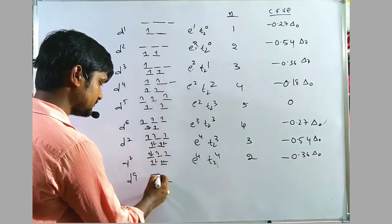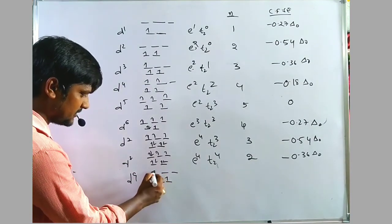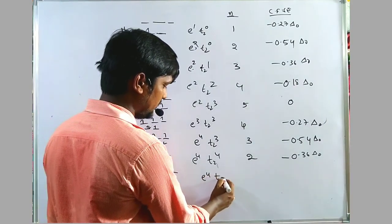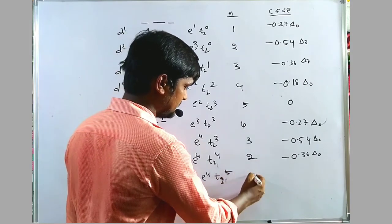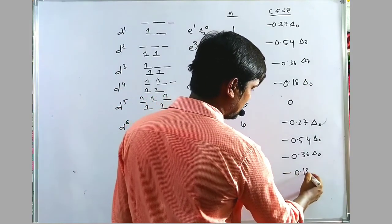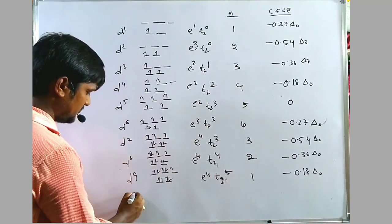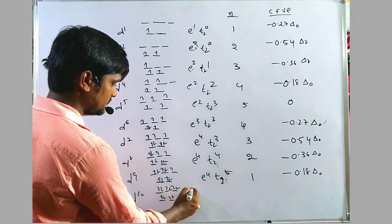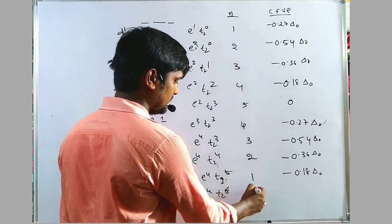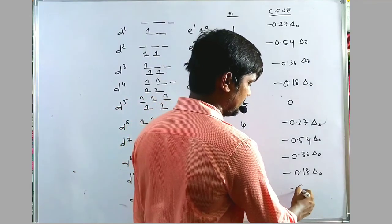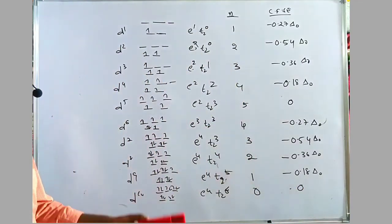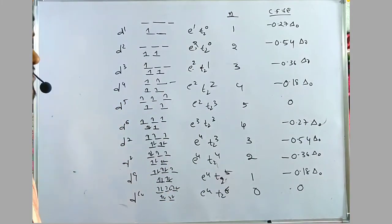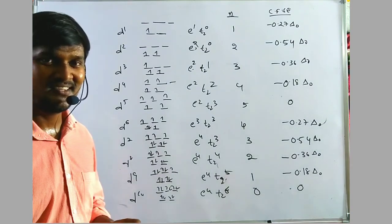For D9 tetrahedral: configuration E⁴T2⁵, 1 unpaired electron, CFSE = minus 0.18 ΔO. For D10: E⁴T2⁶, no unpaired electrons, CFSE = 0. This is the complete trend observed for tetrahedral complexes Crystal Field Stabilization Energy. Thank you for watching.